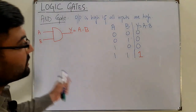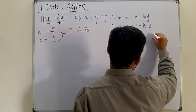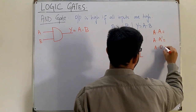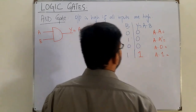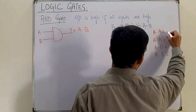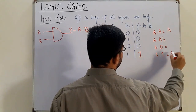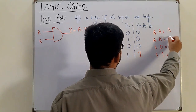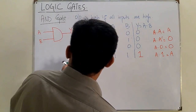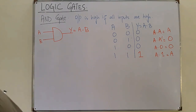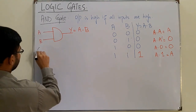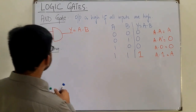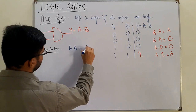Some basic AND gate properties: A AND A = A; A AND 1 = A; A AND 0 = 0; and A AND A-complement = 0. Now we check if the AND gate follows the commutative law, which states that A AND B equals B AND A.